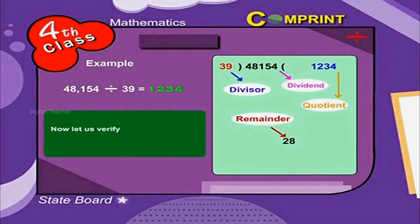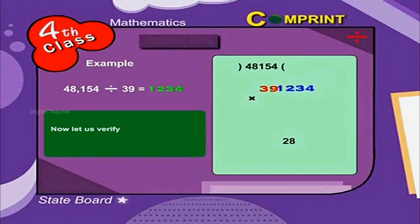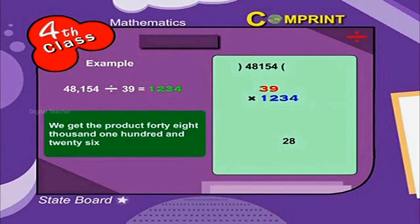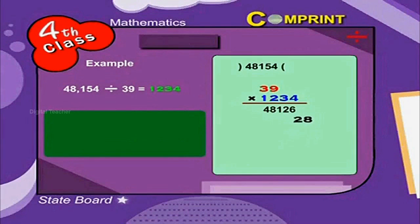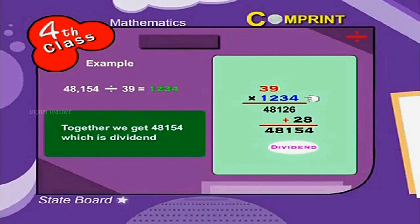Now let us verify. 39, which is the divisor, into 1,234, which is the quotient, we get the product 48,126 plus 28, which is the remainder. Together we get 48,154, which is the dividend. Therefore, 39 into 1,234 plus 28 is equal to 48,154.